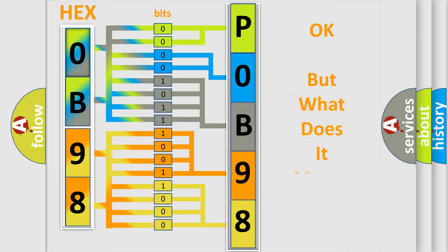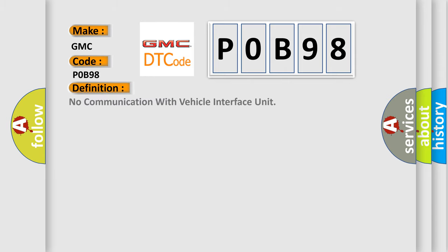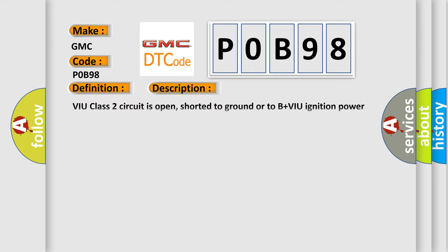The number itself does not make sense to us if we cannot assign information about what it actually expresses. So, what does the diagnostic trouble code P0B98 interpret specifically for GMC car manufacturers? The basic definition is: no communication with vehicle interface unit. Here is a short description of this DTC code: The VIU class 2 circuit is open, shorted to ground, or to B+. The VIU ignition power circuit has a high resistance condition. The VIU main ground circuit has a high resistance condition. The VIU module may have failed and is pulling the circuit low.